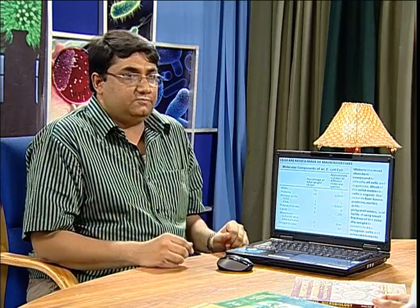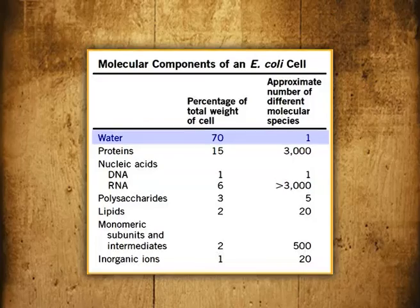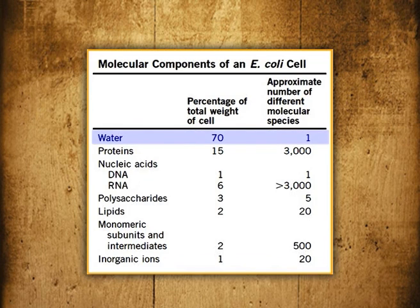For example, ribosomes, which are composed of about 70 different proteins and three to four different RNA molecules. If we analyze the composition of a cell, for example E. coli, if we take the bacteria E. coli as the representative, we will see that the most predominant compound within the cell is water. It takes about 70% of the weight of the cell.